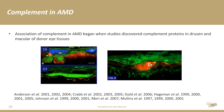There has been an association between complement and AMD for many years. For many years since the late 1990s, Greg Hageman and Don Anderson were among the first to point out that drusen were packed full of a whole range of proteins including C5, C3, and the membrane attack complex.